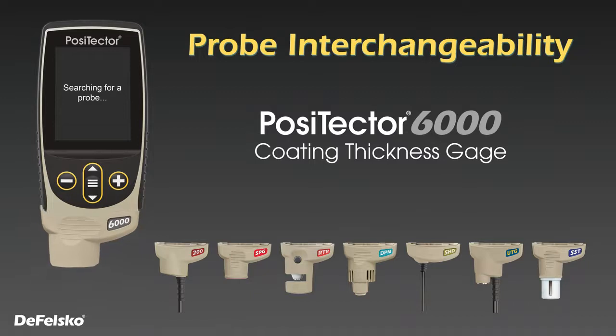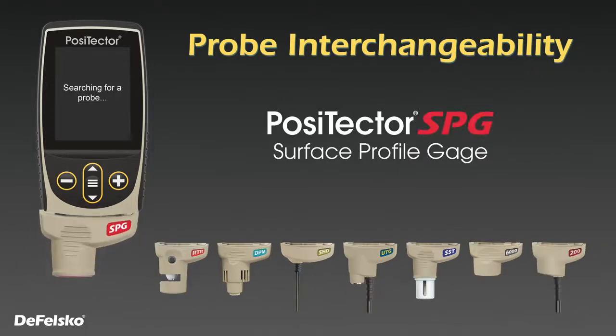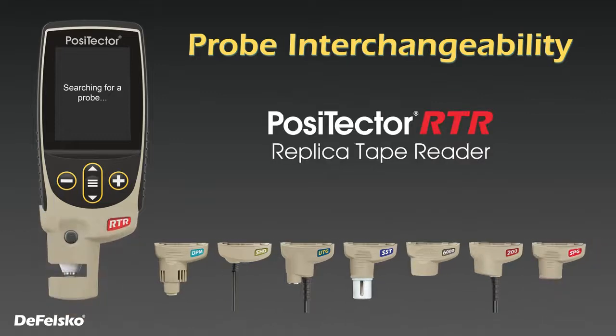The new PosiTector gauge body is compatible with all PosiTector probes manufactured since 2012, quickly transforming from a coating thickness gauge to a dew point meter, a surface profile gauge, gloss meter, and more.